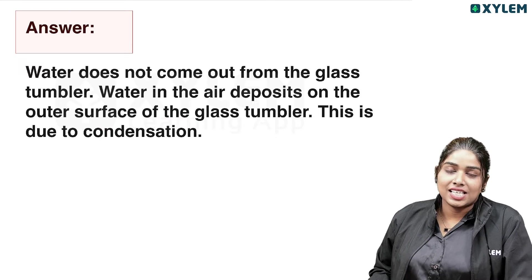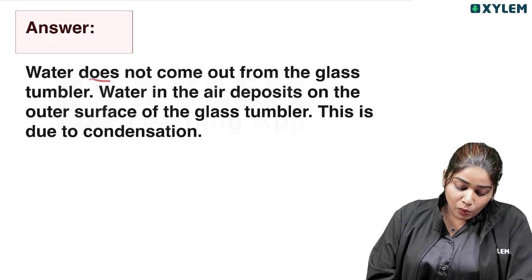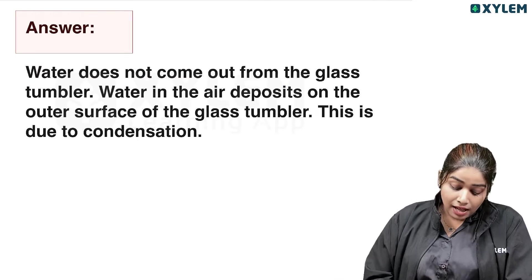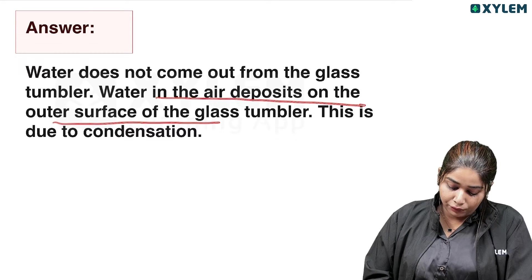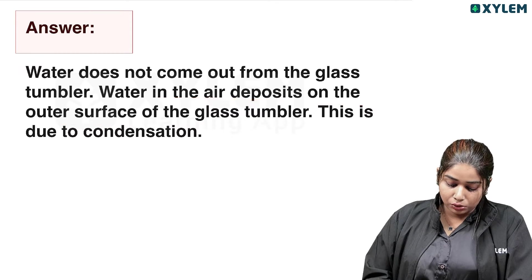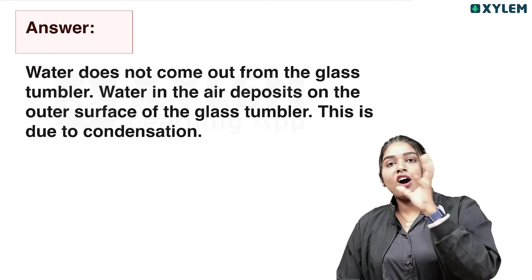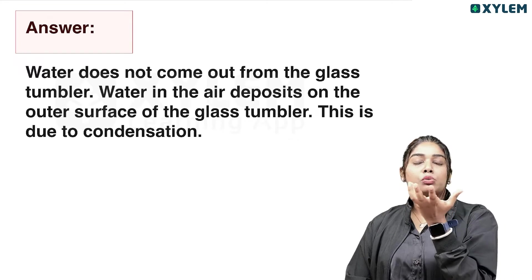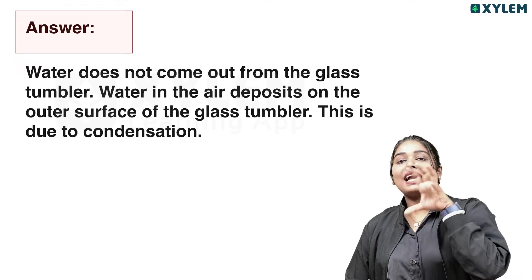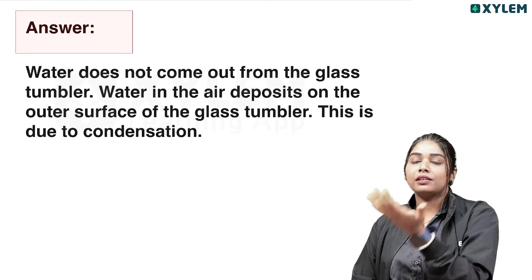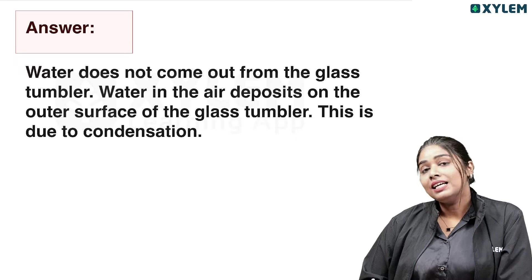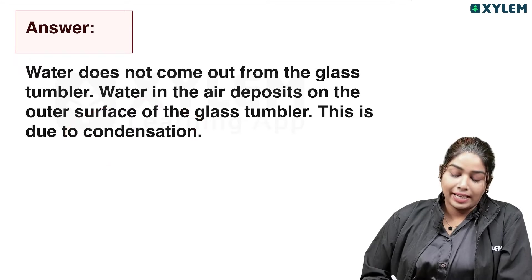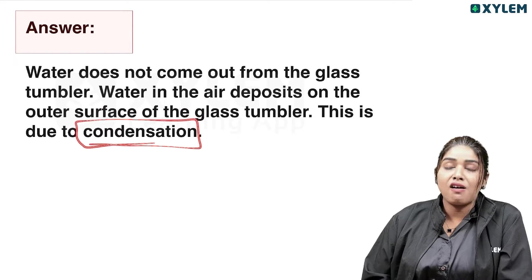What is condensation? Let's check it out. Water doesn't come out from the glass. Water in the air deposits on the outer surface of the glass. This is due to condensation — that means water vapor present in the atmosphere condenses on the cooler surface of the glass, forming water droplets. You can see condensation.